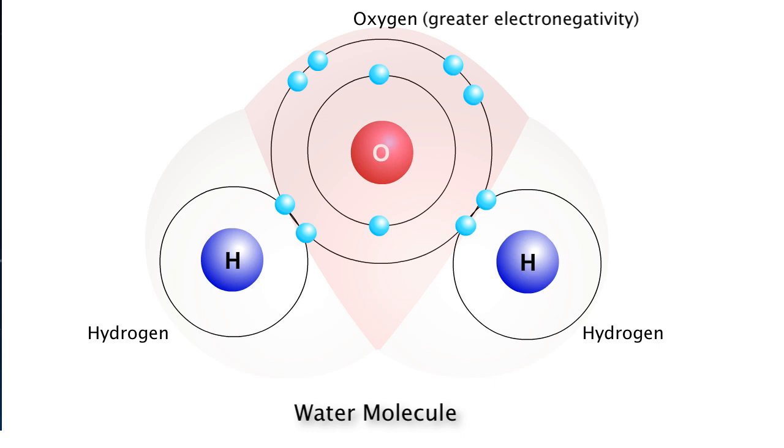Because of this, the electrons that are shared in the covalent bond between the oxygen and hydrogen atoms are attracted more towards the oxygen atom and thus spend, on average, more time orbiting the oxygen atom than the hydrogen atom.